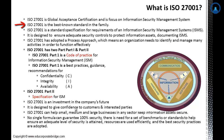ISO 27001 is the best-known standard in the family. It is a standard specification for requirements of an Information Security Management System. It is designed to ensure adequate security controls to protect information assets. Documenting the ISMS is very important in ISO 27001, because it documents all the policies and procedures of the security program.